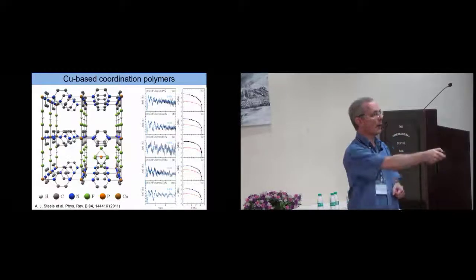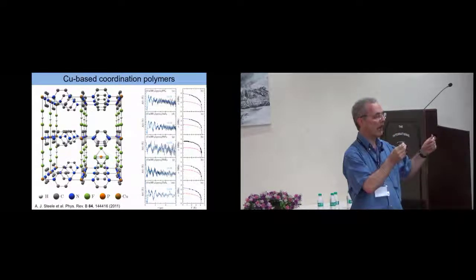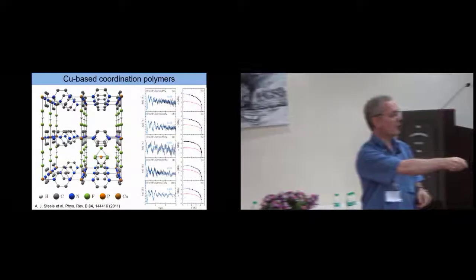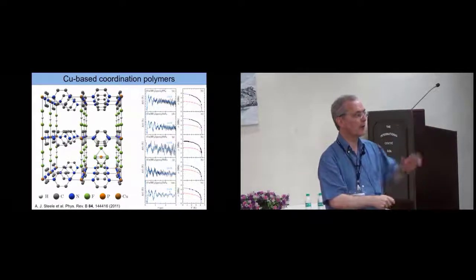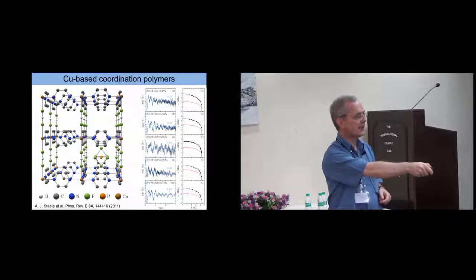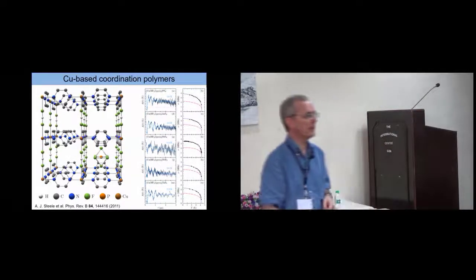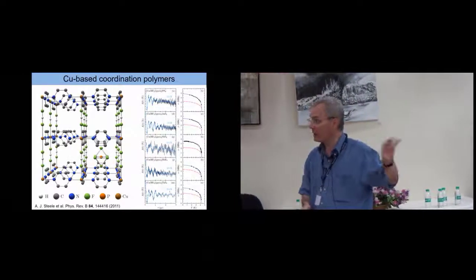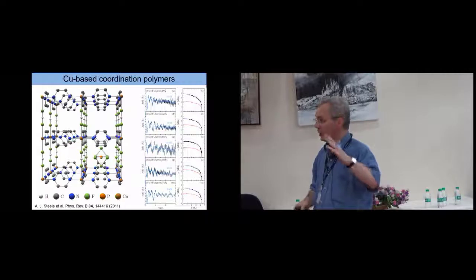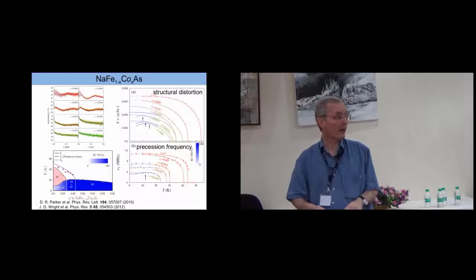One other example, these are some organic materials, where you have copper ions that have a spin. They're linked together with organic groups. And actually, you can just change the organic groups and make lots of different differences. And here, you can just see a whole lot of different compounds. Again, you can see the internal fields measured with mu-SR. And it turns out, in these materials, it's very hard to measure the phase transition using heat capacity, because they're low dimensional. Mu-SR is the best technique for measuring them.